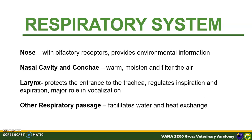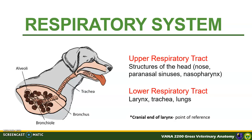Other respiratory passages facilitate water and heat exchange. For anatomical consideration and future terminologies that you might encounter in your practice, the respiratory system can also be divided into upper and lower respiratory tract. The upper respiratory tract is composed of structures of the head, including the nose, paranasal sinuses, and the nasopharynx, while the lower respiratory tract is composed of the larynx, the trachea, and the lungs. The point of reference, or the boundary between the two tracts, is the cranial end of the larynx. In the next slides, we will discuss the anatomy of each structure mentioned.